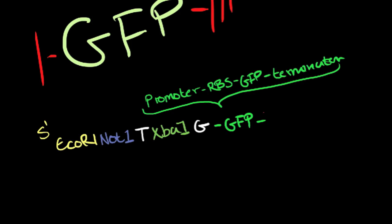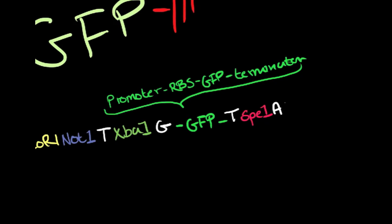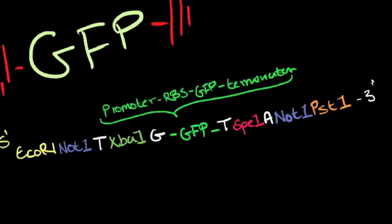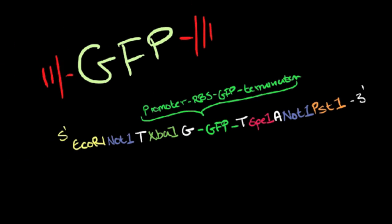And now the suffix sequence. Thymine, SpeI, adenosine, NotI, PstI, and then the 3' end. There's our sequence, which can be made to order online. For insertion, we'll just need an appropriate plasmid and our host strain. To see how to do this, click the annotation.